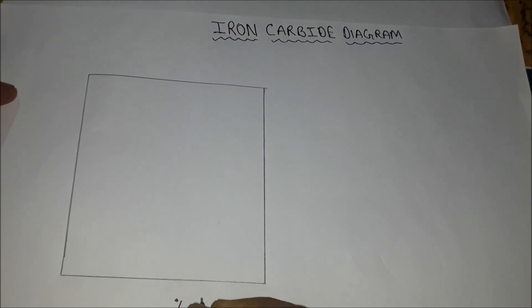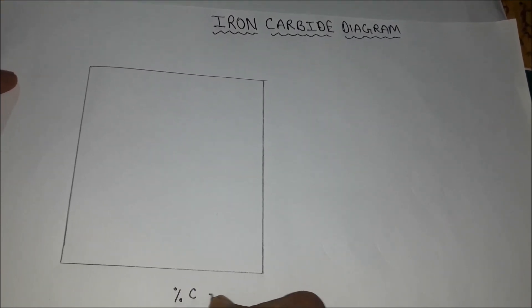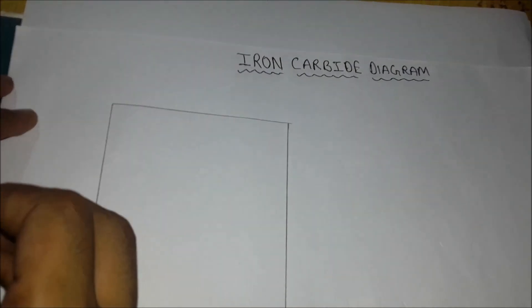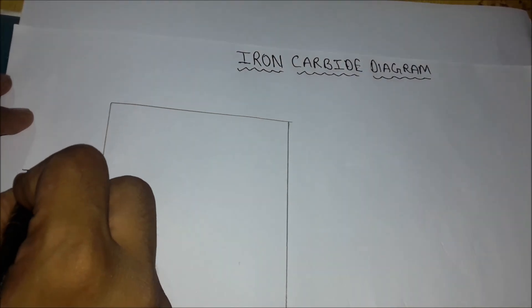On the X axis we will take the Percentage of Carbon, and on the Y axis we will take Temperature.